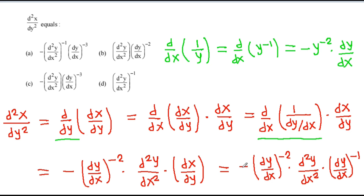We get minus of dy by dx to the power minus 3 into d squared y by dx squared. So the correct option is option C.